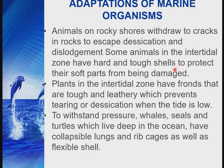Seals and turtles living deep in the water have collapsible lungs and rib cages, as well as flexible shells, enabling them to withstand water pressure. Fish and other marine organisms obtain oxygen from the water through their gills or skin. Many have a streamlined shape which enhances speed and movement efficiency. Many marine organisms also have dark blue-gray coloring that blends with the environment, and some planktons possess oil globules that act as floats.